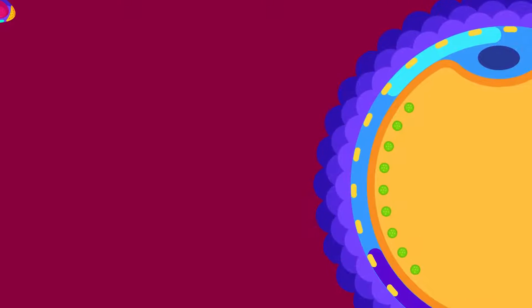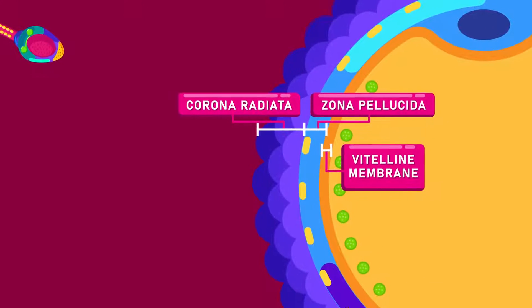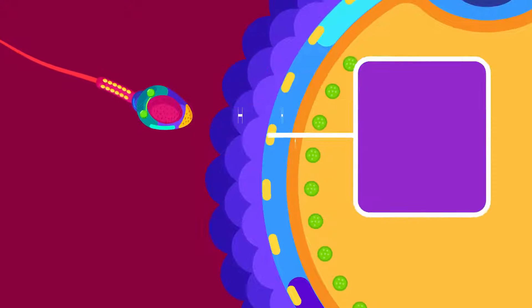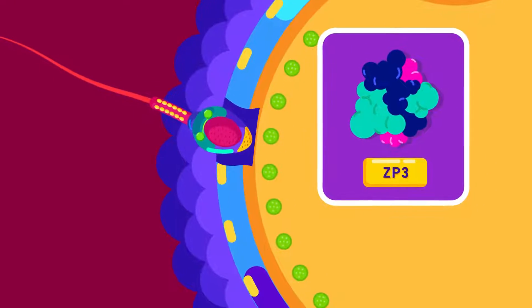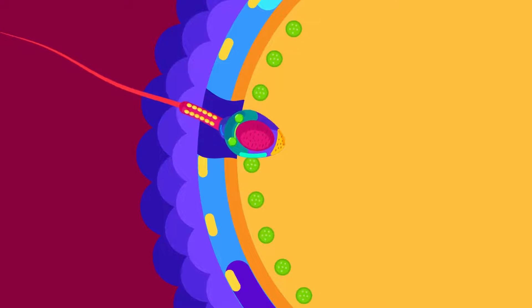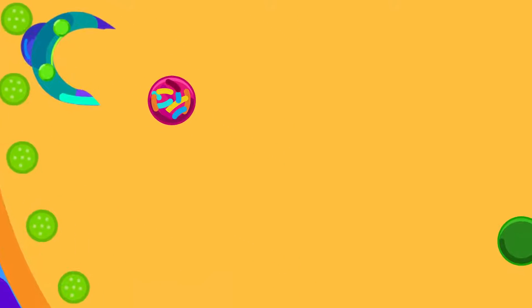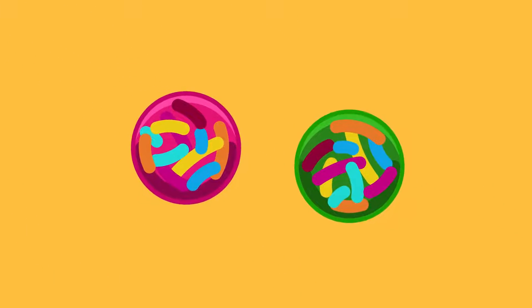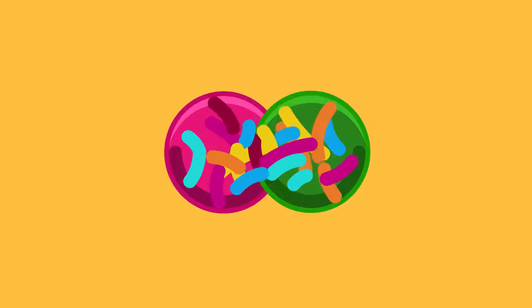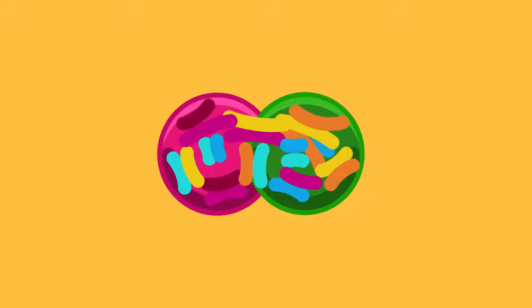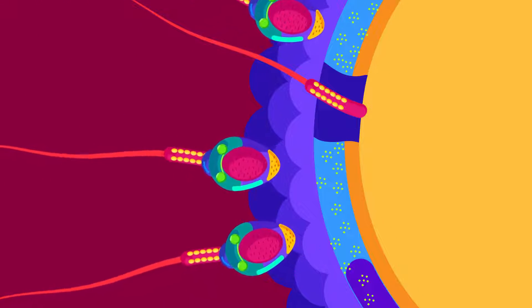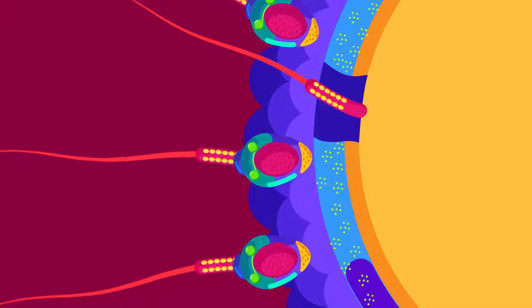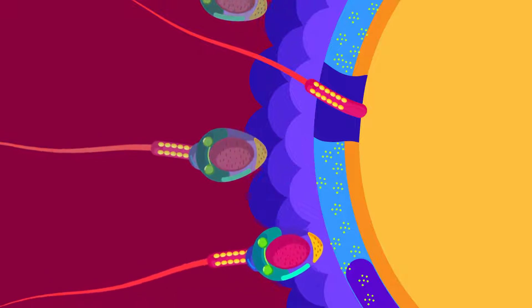Usually, the egg released by the ovary is enclosed by several layers of follicle cells. To pierce the egg, the sperm releases an enzyme from the acrosome to break down one of the inner layers of the egg cell. Only one sperm enters the egg. The haploid sperm nucleus fuses with the haploid egg nucleus, and a diploid zygote is formed. As soon as the sperm enters the egg, the membrane of the egg becomes impermeable to all other sperms trying to enter. The remaining sperms, which do not fertilize, eventually die.